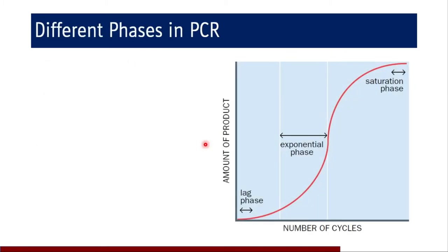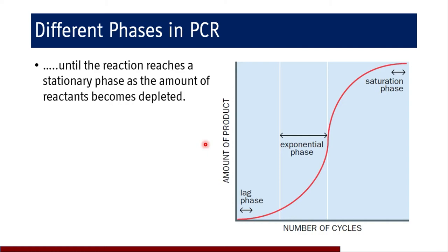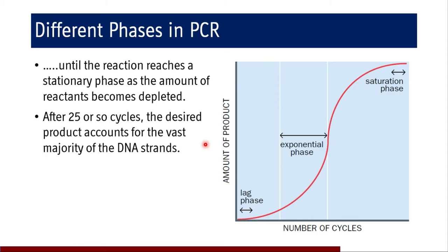Different phases of PCR continue until the reaction reaches a stationary phase or until reactants are depleted, or until we stop the reaction in the thermocycler. Usually after 25 or so cycles, the desired product accounts for the vast majority of DNA strands. We get sufficient quantity of DNA from a single strand after about 25 cycles.